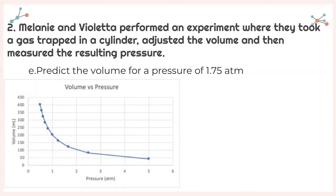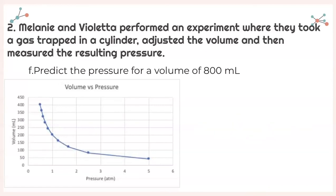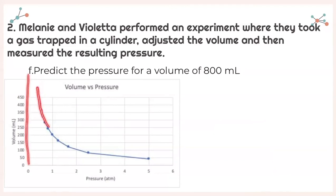Next, predict the volume for a pressure of 1.75 atmospheres. Looking at my chart, that's going to give me a volume of about 100 milliliters. Last one with our graph: predict the pressure for a volume of 800 milliliters. My graph doesn't go all the way to 800 milliliters, but I can follow the curve. Remembering from math class, we have an asymptote at 0, so the curve continues but never touches it. I would say the pressure at 800 milliliters would be about 0.25 atmospheres — you can calculate it using one of the known pressures or make an educated prediction from the graph.